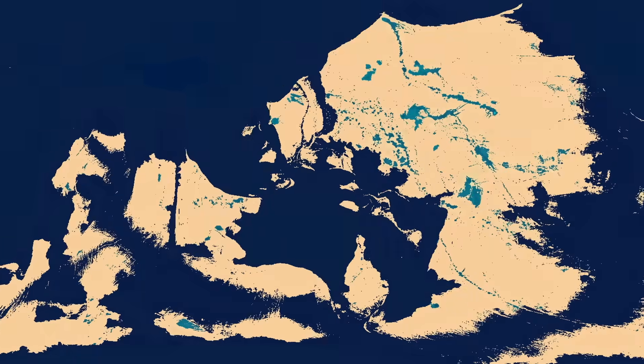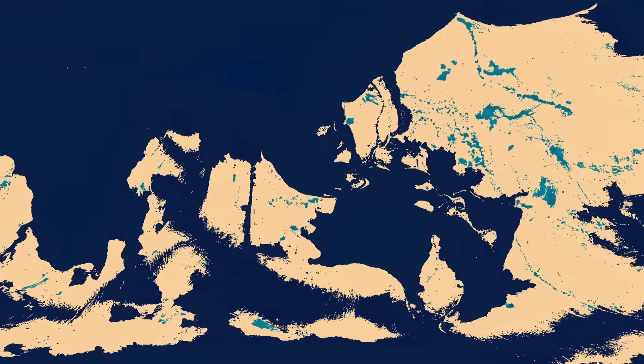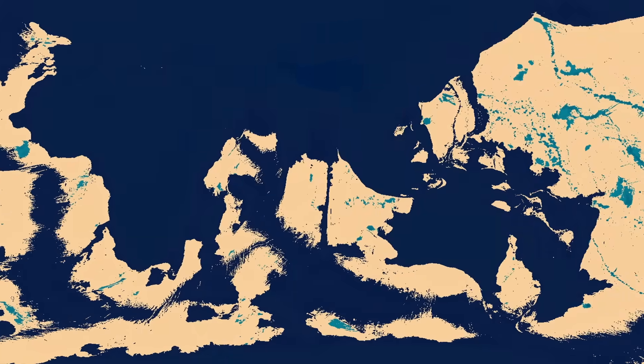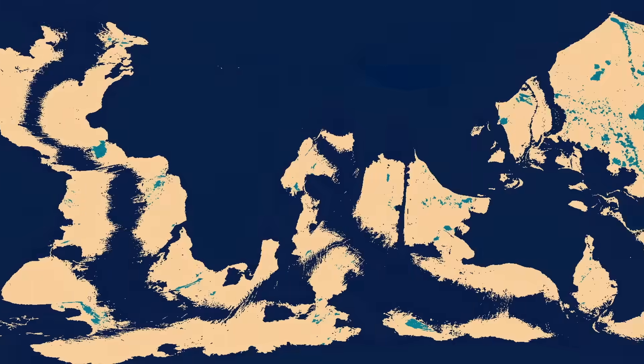There would also be many large lakes, probably deep, and the coastlines of this inverted Earth would be more fjord-like.